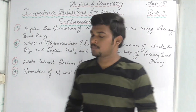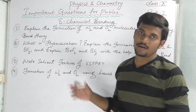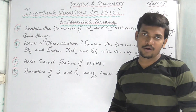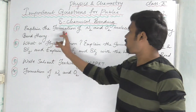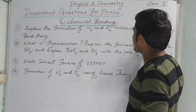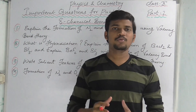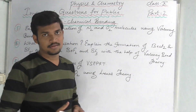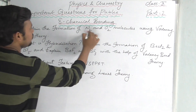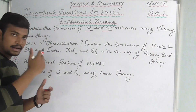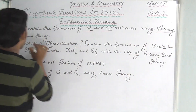The next important chapter is Chemical Bonding — Chapter 7. We will explain the important questions for four marks. Explain the formation of N2 and O2 molecules using valency bond theory. It is important that N2 (nitrogen) and O2 (oxygen) molecules are formed using valency bond theory.